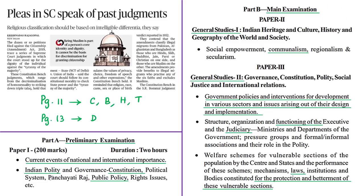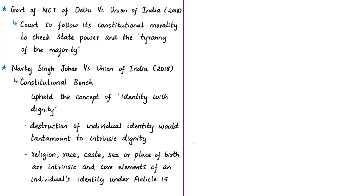This news article states some of the observations made by the Supreme Court in various judgments where the Supreme Court stood for the dignity of the individual against the tyranny of the majority. The syllabus relevant for the analysis of this news article has been highlighted here for your reference. We are discussing these observations because they are important with respect to Article 141 of the Indian Constitution, which states that the law declared by the Supreme Court shall be binding on all courts within the territory of India. Here, the law refers to the judgment delivered by the Supreme Court.